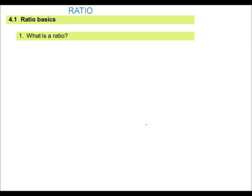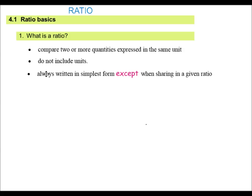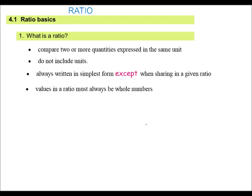When we look at Ratios, what are they? Well, a ratio compares two or more quantities expressed in the same unit. Do not include the units. Always write it in its simplest form, except when sharing in a given ratio. Values in the ratio must always be whole numbers, cannot be a fraction or a decimal. And generally, the ratio is separated by a colon, the values in the ratio.